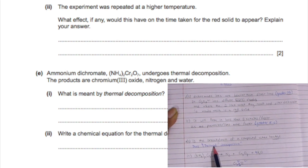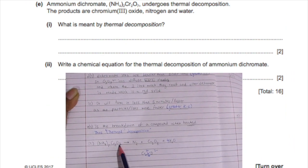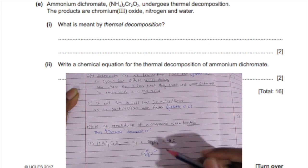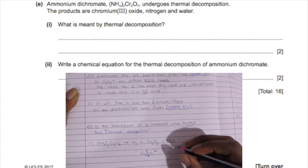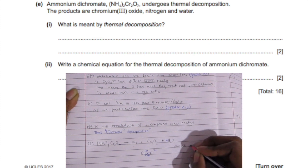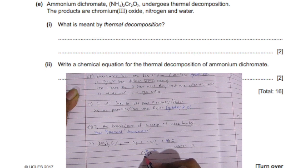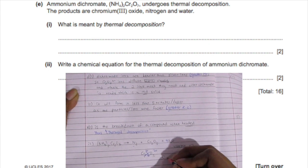Ammonium dichromate undergoes thermal decomposition. Thermal decomposition is the breakdown of a compound when heated—thermal has to do with heat, decomposition with breakdown. Write the chemical equation: ammonium dichromate breaks down to nitrogen, chromium(III) oxide, and four water molecules. Chromium(III) means Cr3+, oxygen is O2-, so you cross them to get Cr2O3.